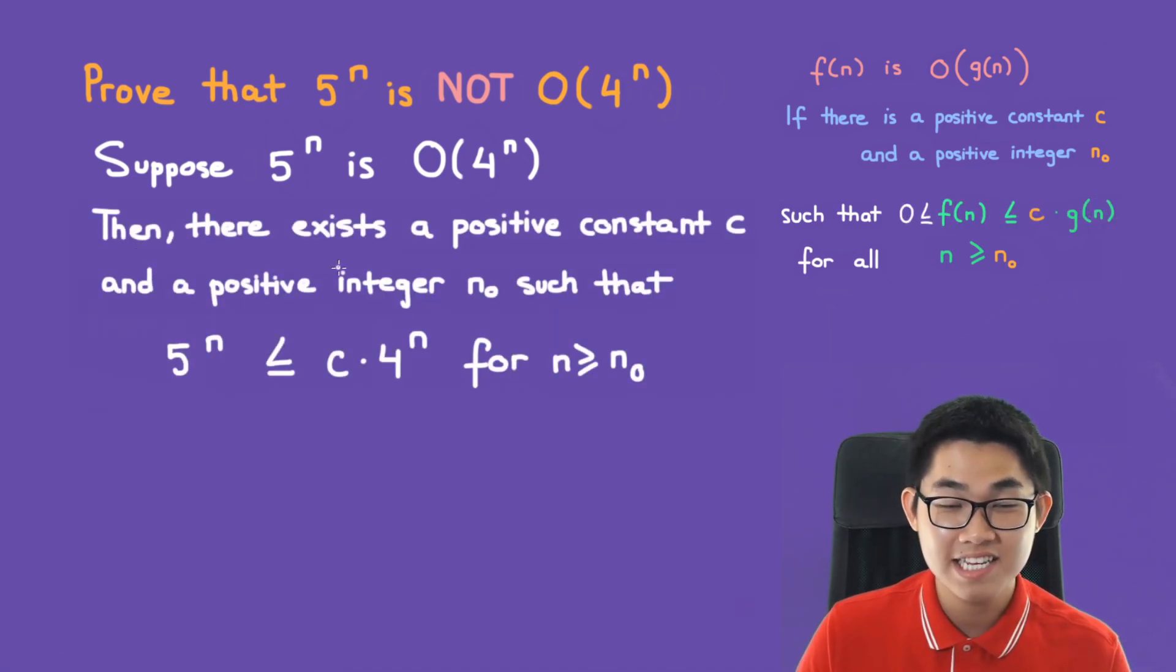Then there exists a positive constant c and a positive integer n₀ such that the inequality 5^n is less than or equal to c times 4^n for n is greater than or equal to n₀.